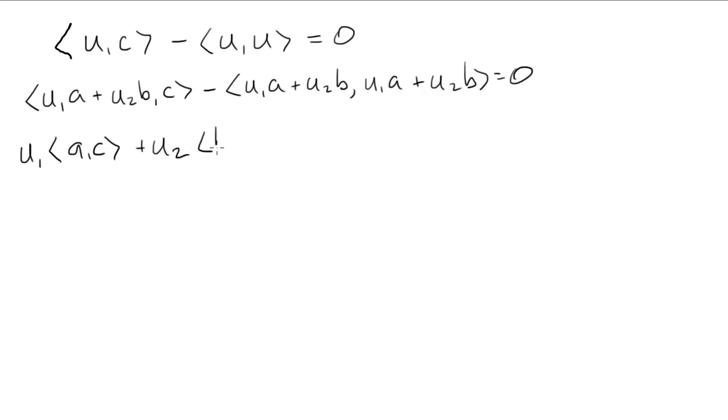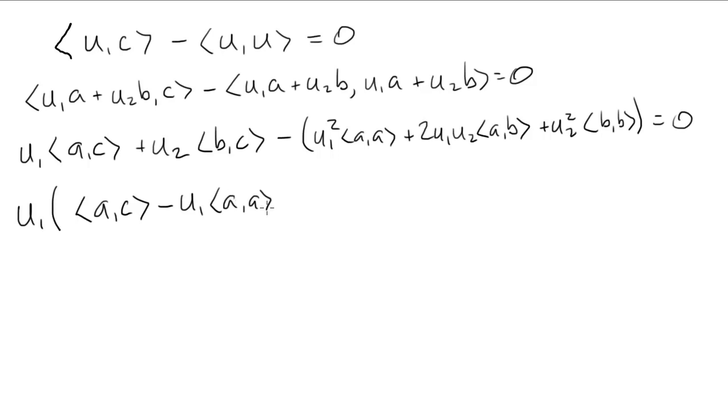Use linearity to expand. Here, I'm using linearity in each component twice. Collect together the U1 terms. Collect together the U2 terms. And the product terms. I want that sum to be zero.